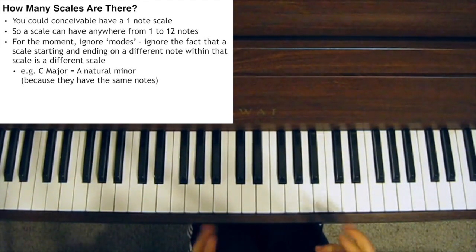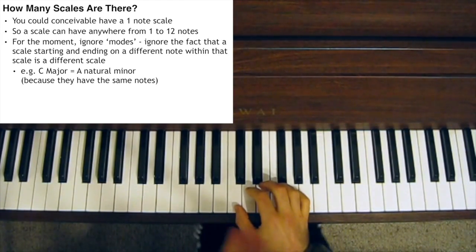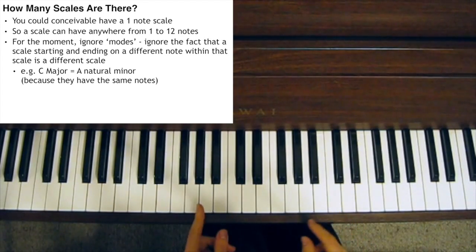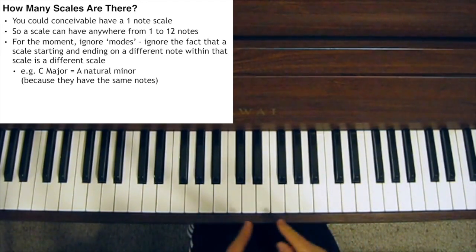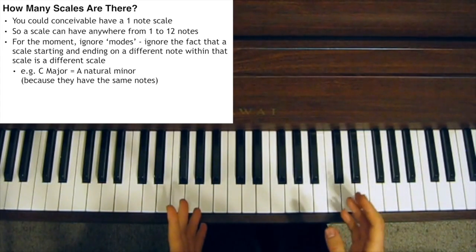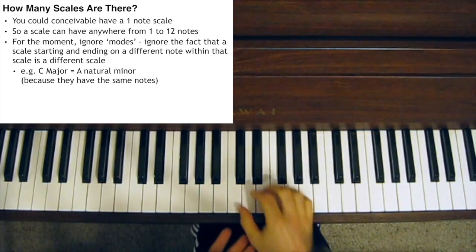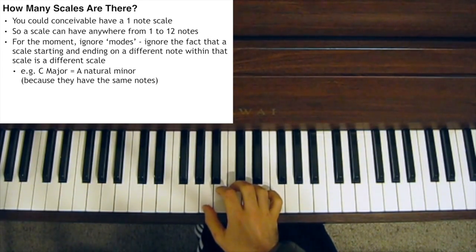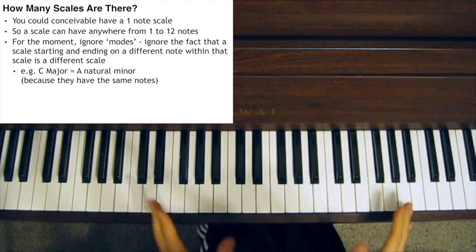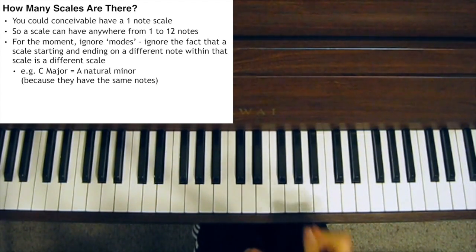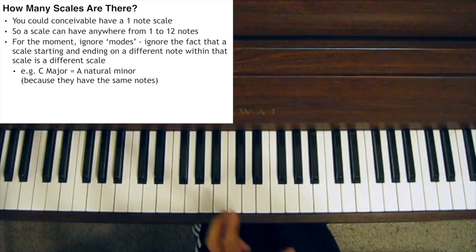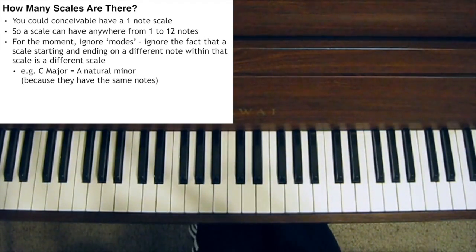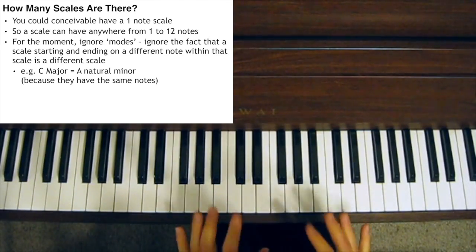Now, let's for the moment ignore modes. That is, let's ignore the fact that if you play a particular scale and then you play all the exact same notes but start and finish on a different note within the scale, then technically you have a new scale. For example, the scale of C major has the exact same notes as the scale of A natural minor. So we're going to ignore that for the moment and just focus on unique scales — if a particular scale has all the same notes as another scale, they are the same scale.